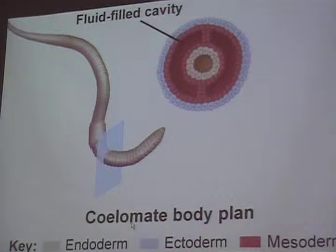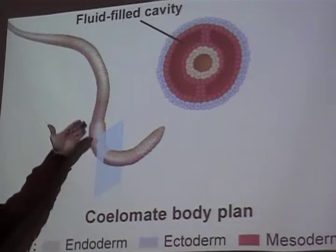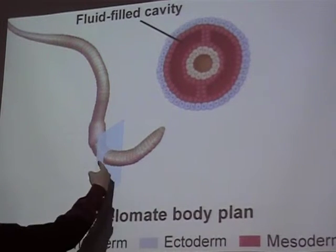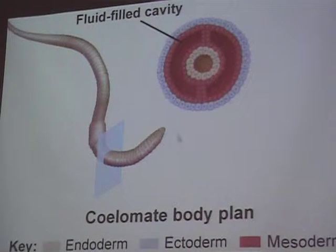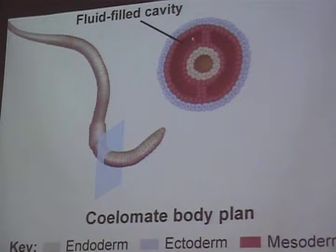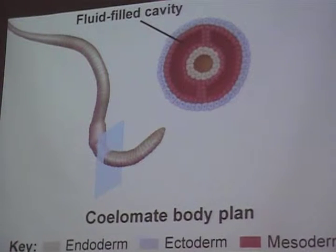Now let's talk about a coelom. A coelom is an open space. If you were to take an earthworm and do a cross section — cutting through it and looking inside — you see a layer of ectoderm on the outside (the blue), red cells are mesoderm in the middle layer, and endoderm on the inside (the tan layer). But you see a space — an open space within the mesoderm. That space is completely surrounded by mesoderm on all sides. That's a coelom: a space within the mesoderm.